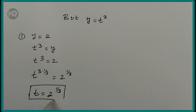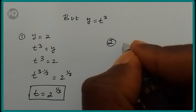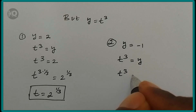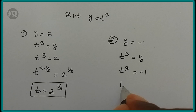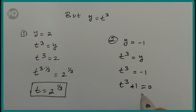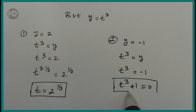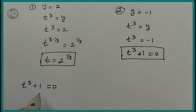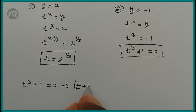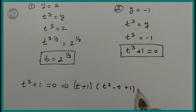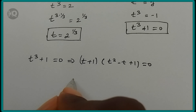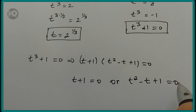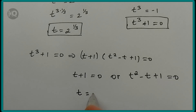For Case 2, when y equals minus 1: t cubed equals minus 1, which means t cubed plus 1 equals 0. Using the algebraic identity, this is equivalent to (t plus 1)(t squared minus t plus 1) equals 0. From the first factor, t plus 1 equals 0, giving t equals minus 1.